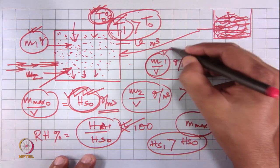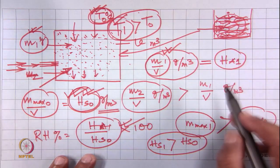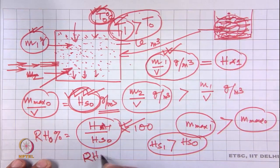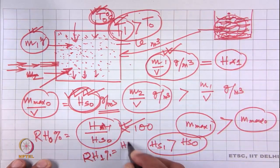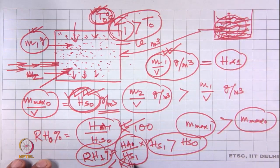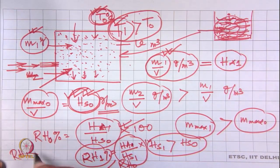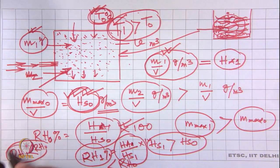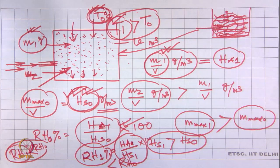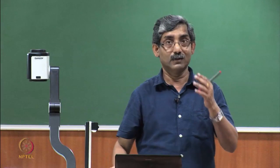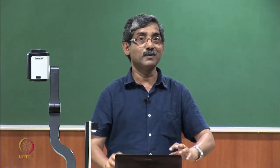Keeping the absolute humidity of the room as m1, at higher temperature T1 the relative humidity RH1% equals HA1 divided by Hs1 multiplied by 100 — which is less than RH0%. Because the denominator for RH1 is higher. So for the same moisture quantity, if the temperature increases, the relative humidity will be less.